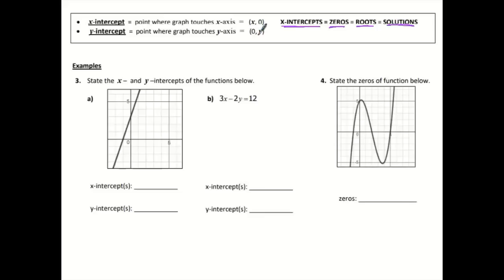In example 3, it says state the x and y intercepts of the functions below. Let's label our x and y axis. We see this line touches my x-axis right here, so the x-intercept is (negative 1, 0). My y-intercept is where this graph touches the y-axis, which is going to be (0, 3).